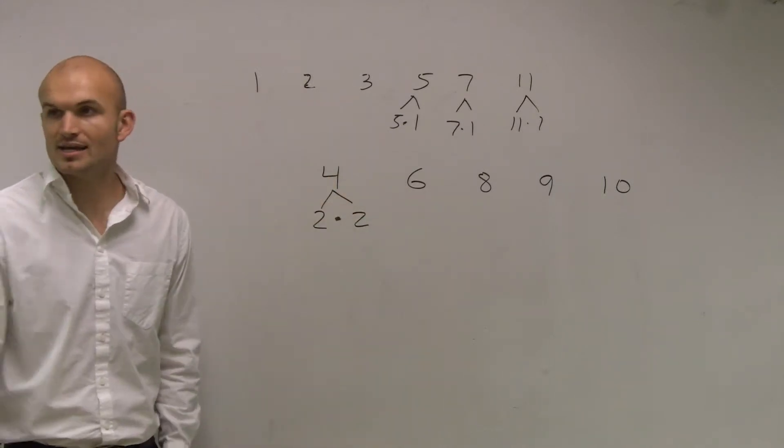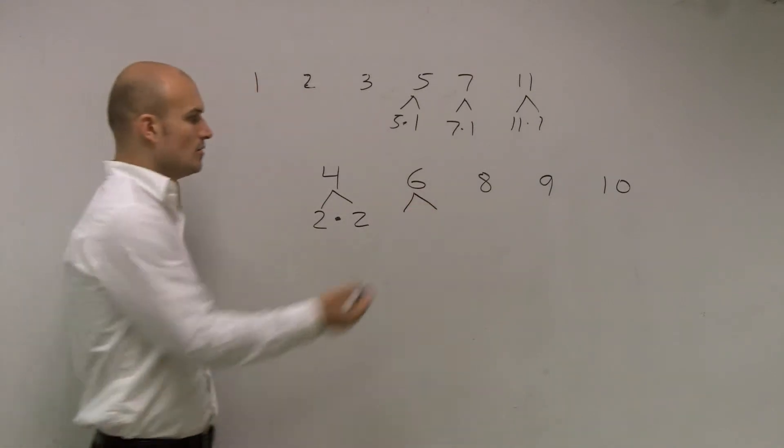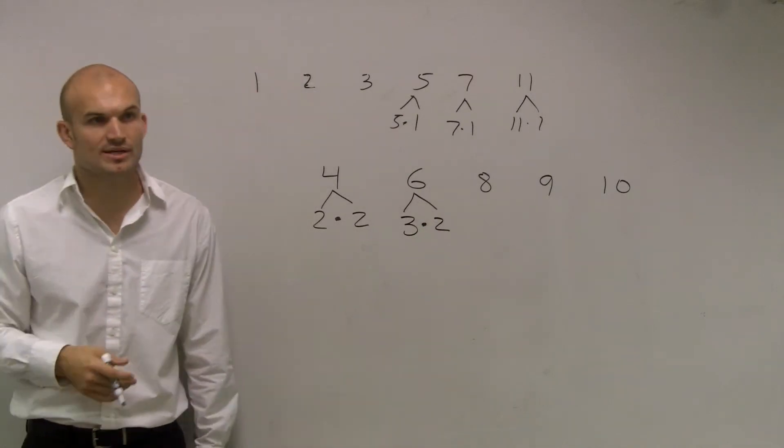If I say factor 6, that means break it up into two numbers that are prime. You can rewrite 6 as a product of two prime numbers, 3 and 2.